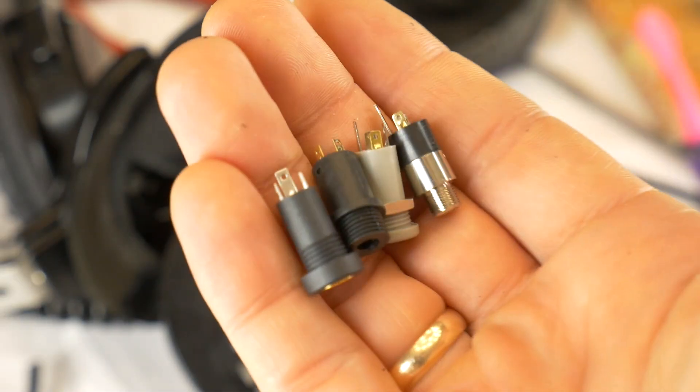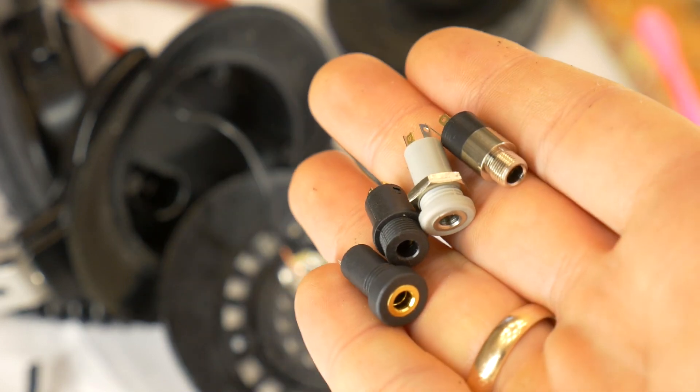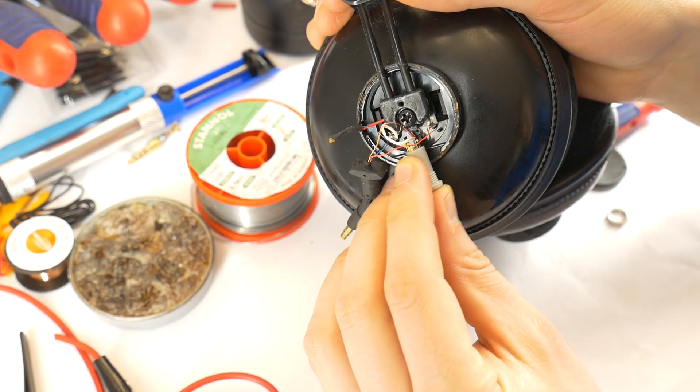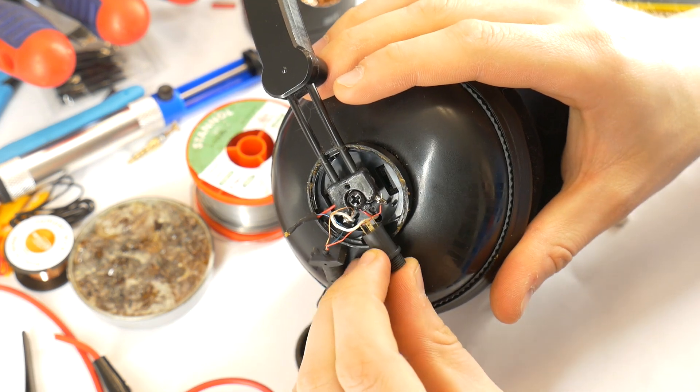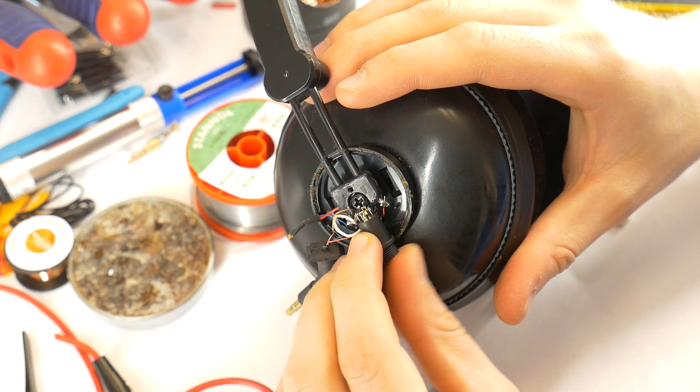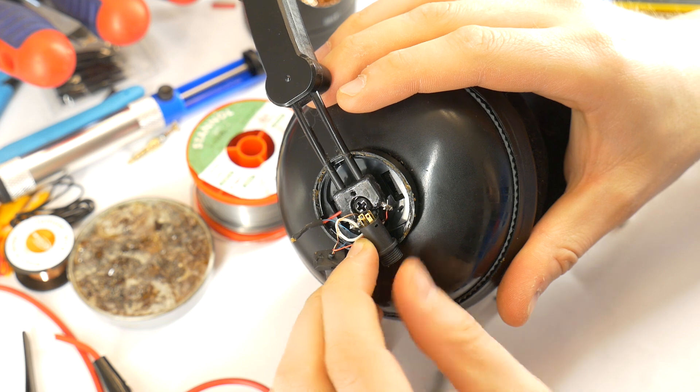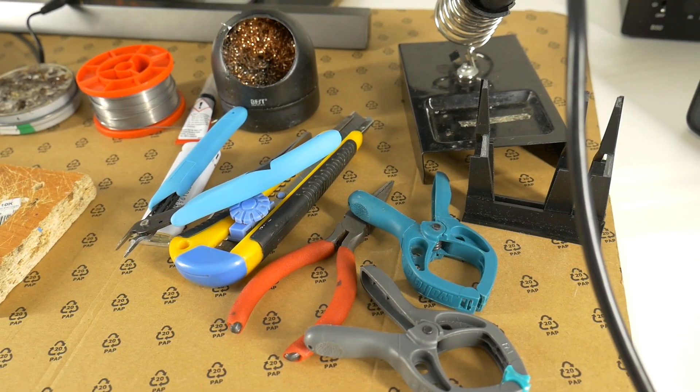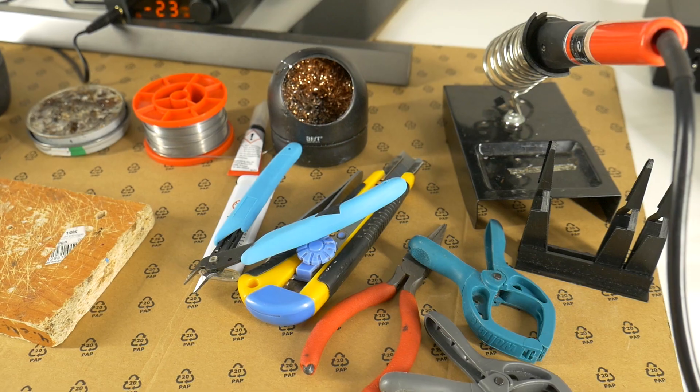To make this DIY mod you need to buy a 3.5 millimeter socket that will fit in your headphone housing where the current cable enters. The link to the sockets in the video description. You will also need to ask your grandmother for a soldering tool kit.